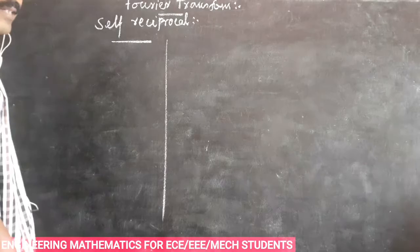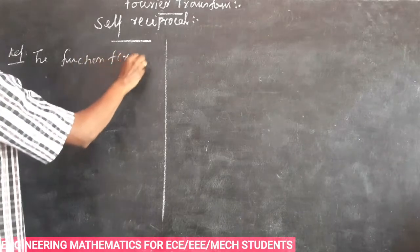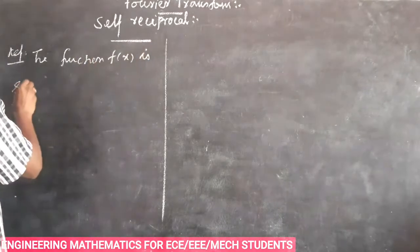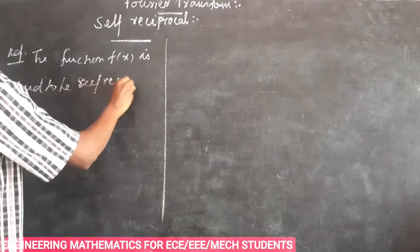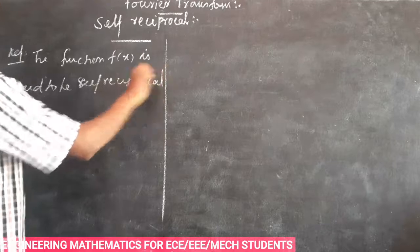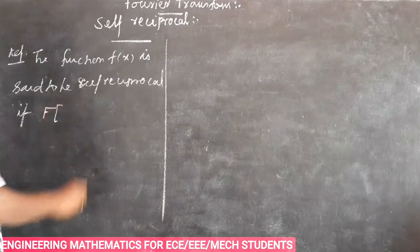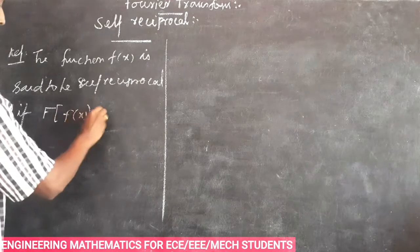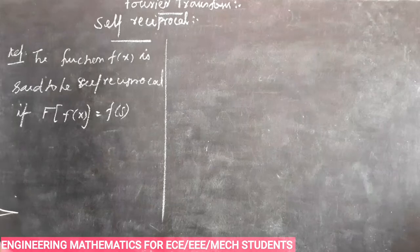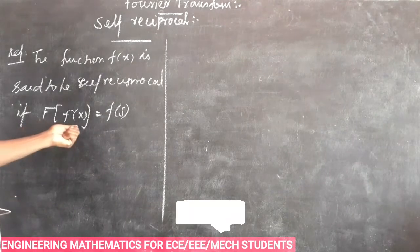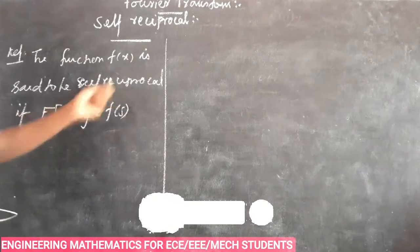Self-reciprocal definition: the function f of x is said to be self-reciprocal if the Fourier transform of f of x is equal to small f of x. That is, Fourier transform of small f of x is equal to small f of x. So f of x is called self-reciprocal.